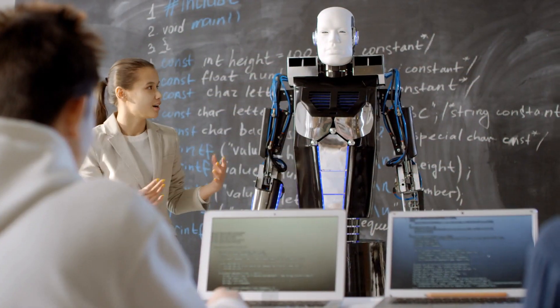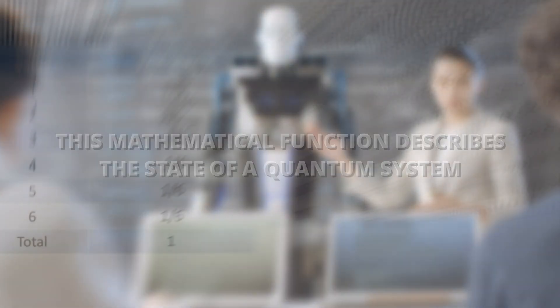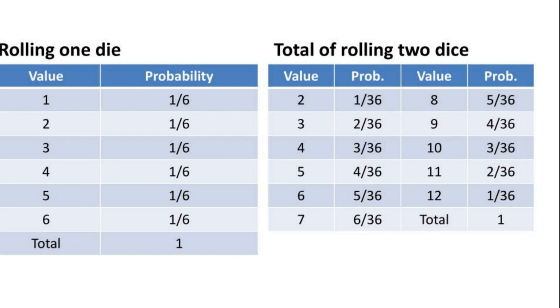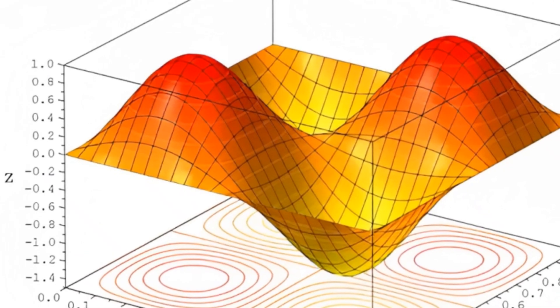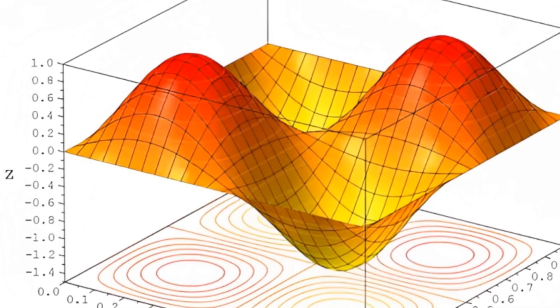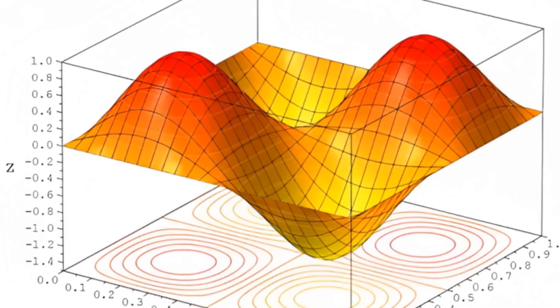At the heart of quantum mechanics is the wave function. This mathematical function describes the state of a quantum system. It contains information about all possible states of a system and their corresponding probabilities. However, the wave function doesn't tell us which state we'll observe. Instead, it gives us a cloud of possibilities.